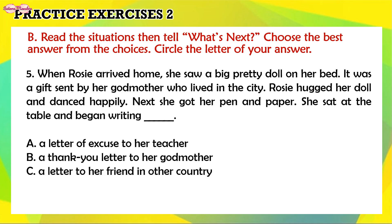5. When Rosie arrived home, she saw a big pretty doll on her bed. It was a gift sent by her godmother who lived in the city. Rosie hugged her doll and danced happily. Next she got her pen and paper, sat at the table, and began writing — A. A letter of excuse to her teacher. B. A thank you letter to her godmother. C. A letter to her friend in another country. The answer is B. A thank you letter to her godmother.